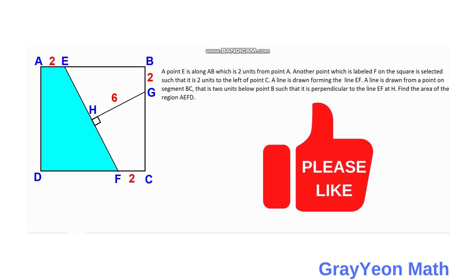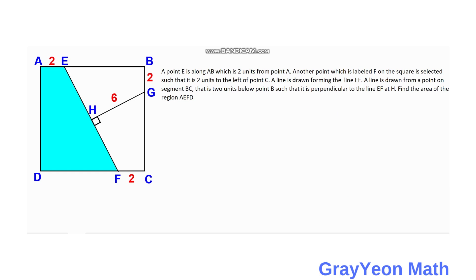Please like this video. So first thing we have to do is we need to label segment AD as S and segment DF as S minus 2. Next, we draw a line from point E downwards perpendicular to segment DF and we label this intersection as I.